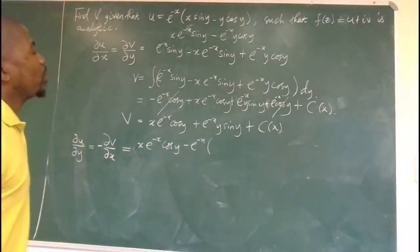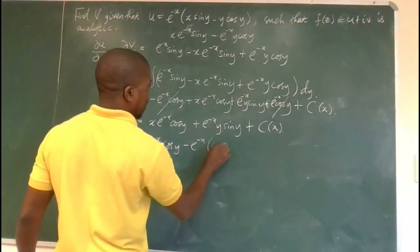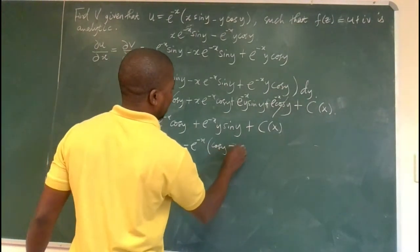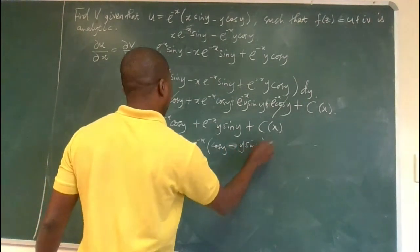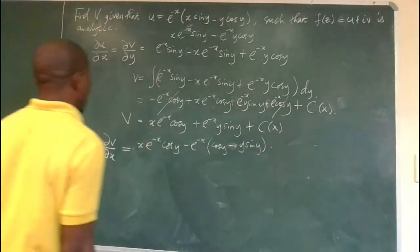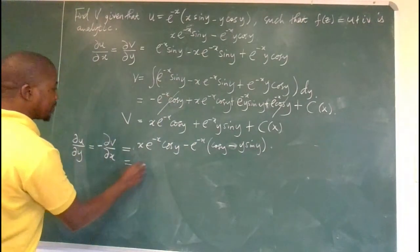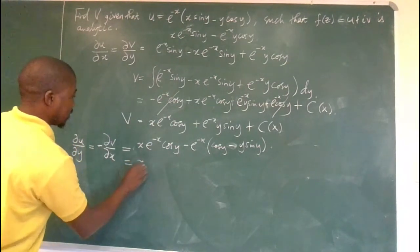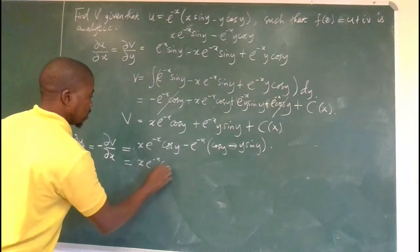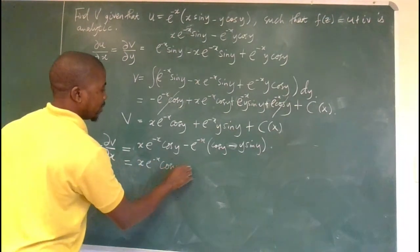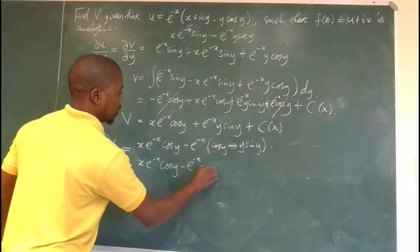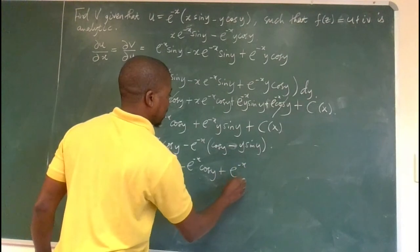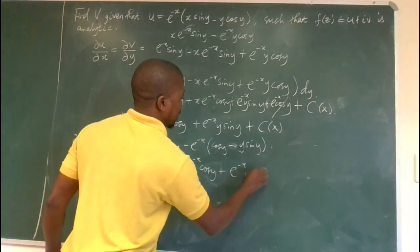Continuing the product rule on the second term, we get -e^(-x)cos(y) + e^(-x)y·sin(y). Removing the brackets, we have: xe^(-x)cos(y) - e^(-x)cos(y) + e^(-x)y·sin(y). We then need to integrate that expression with respect to x to find v.